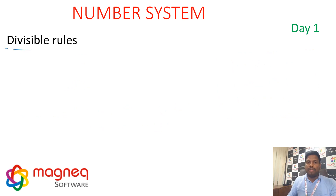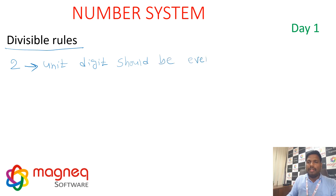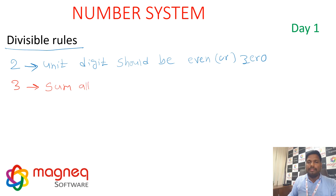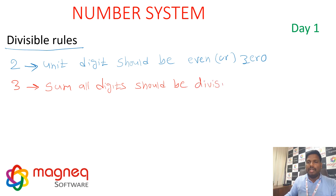Next, divisibility rules. First, the rule for 2: the unit digit (last digit) should be even or 0. Next, the rule for 3: the sum of all digits should be divisible by 3.